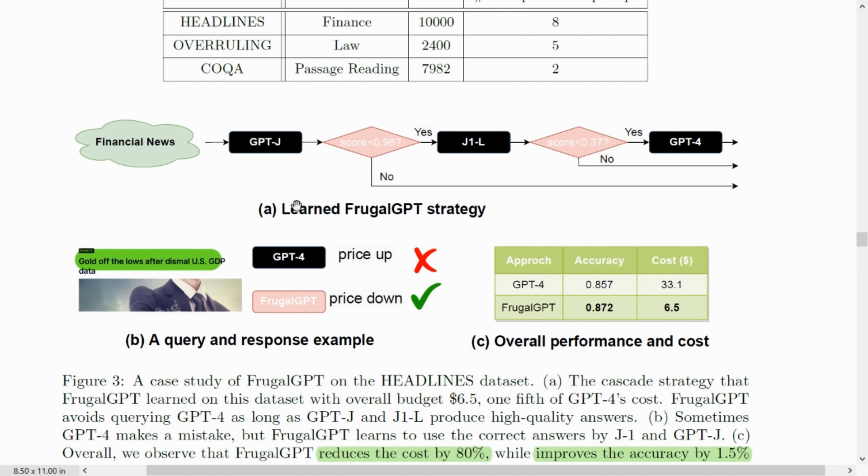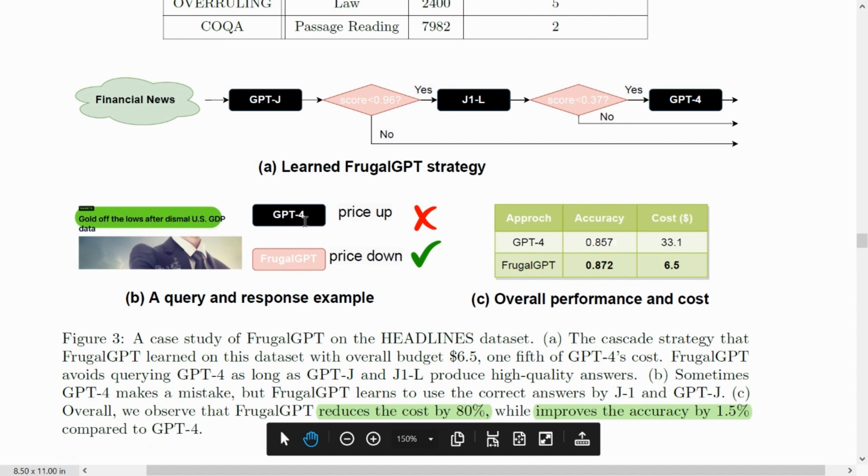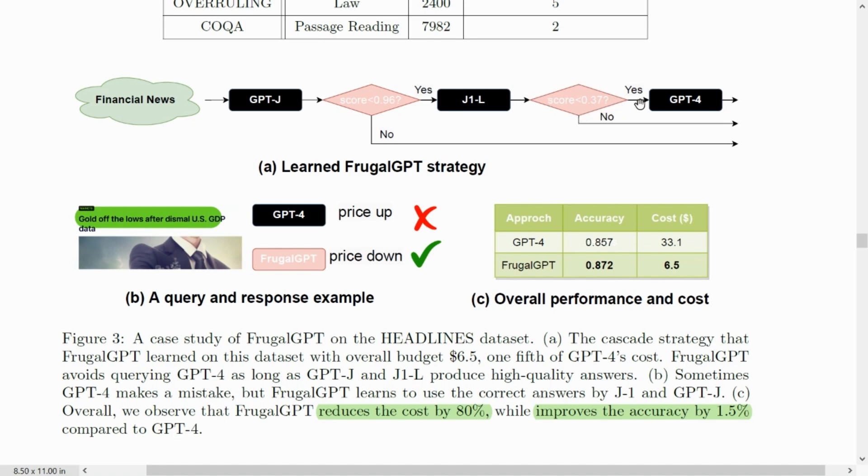For example, here in the Financial News or in the Headlines dataset, when they found out the performance of FrugalGPT with respect to GPT-4, we find that there is a cost reduction of about one-fifth of the cost of GPT-4 and there is an improvement of accuracy of about 1.5%. In certain cases, GPT-4 even got some wrong results, but FrugalGPT was able to accurately bring it out. This strategy that will be implemented is that the learned FrugalGPT strategy will first try on a lower cost LLM provider. And if the score is less than 0.96 in this case, it will move on to the next higher accurate or higher cost LLM. And if the accuracy is even not satisfied, it will move on to GPT-4.